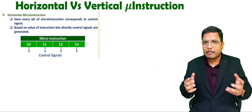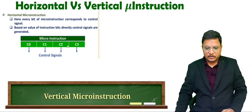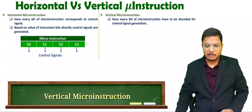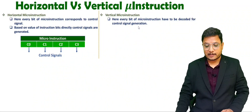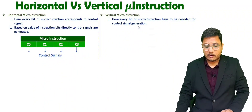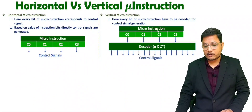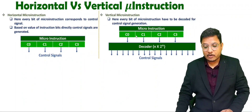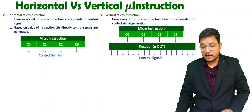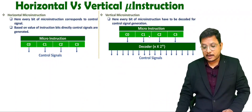Now let us understand vertical micro instruction. In vertical micro instruction, every bit of the micro instruction has to get decoded first before control signals are generated. For example, in vertical micro instruction we have 4 bits — C0, C1, C2, C3 — but these bits do not give you control signals directly. After these bits, you use a decoder, and the decoder decodes them and based on that generates the control signals.